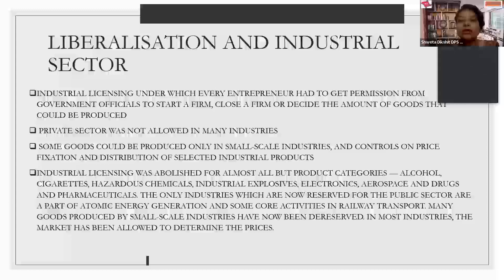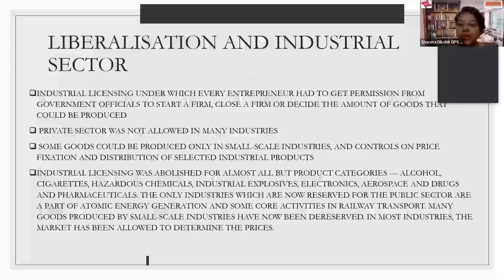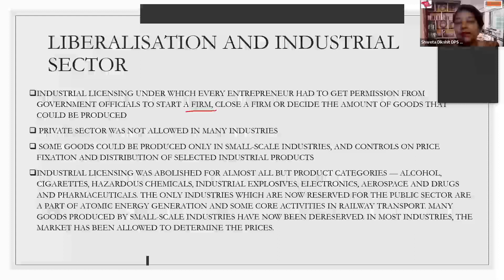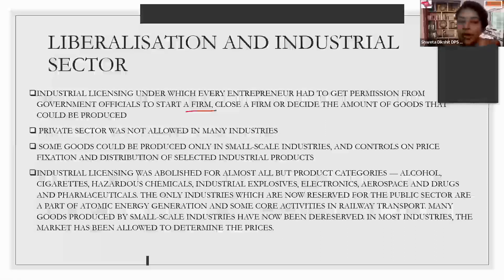Regarding the industrial sector: I'll take you back to IPR 1956 discussed in the last session. There we studied that firms were divided into three categories — Firm A, Firm B, and Firm C. Firm A had all control over production as they were public sector undertakings. All industries other than Firm A, B, and C had to take a license from the government, resulting in License Raj.